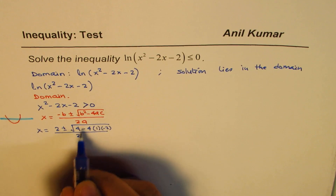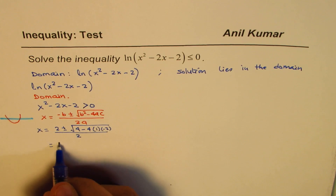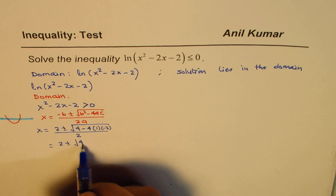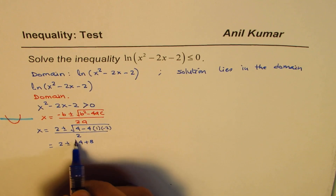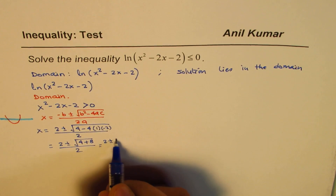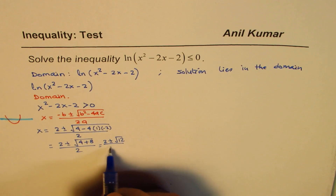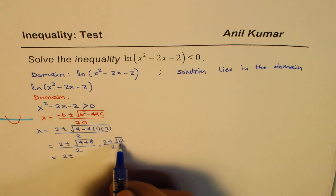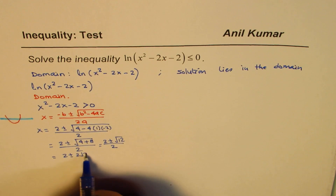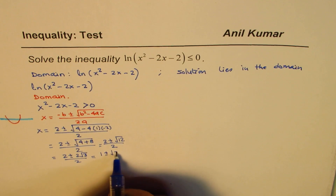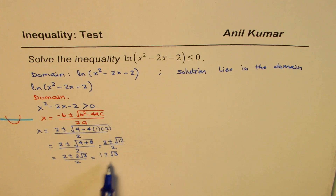If you solve this, you get 2 ± √(4 + 8) divided by 2, or 2 ± √12 divided by 2. Since 12 = 4 × 3, this becomes 2 ± 2√3 over 2, or dividing by 2 we get 1 ± √3. So that gives you the zeros of the quadratic.